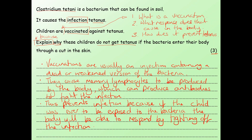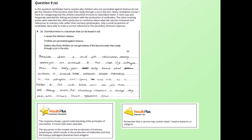What I'd like to do now is show you an exemplar answer and show you how the examiner viewed that question. There's a little bit of information up here — you might want to pause and have a little read through that — but it talks about generally how candidates across the country answered that question. So this is the response: because when the child gets vaccinated, memory lymphocytes are produced so that when the pathogen enters the body, your body knows what antibodies to produce. These antibodies attach themselves to the pathogen's antigens and act as a marker so that white blood cells can then find and destroy them. The secondary response is also very fast and occurs before the symptoms occur. So a lot more scientific terminology in here, but generally it's the same sort of thing that we've just talked about.